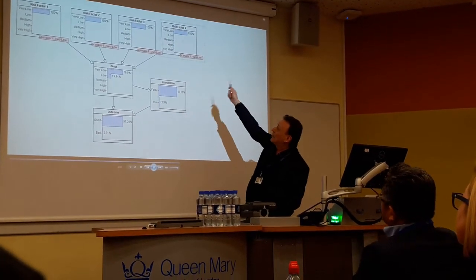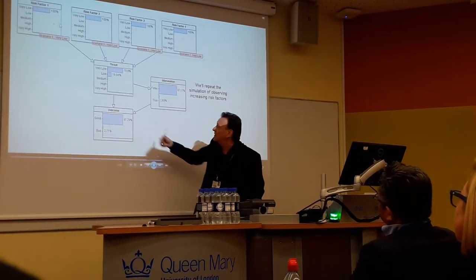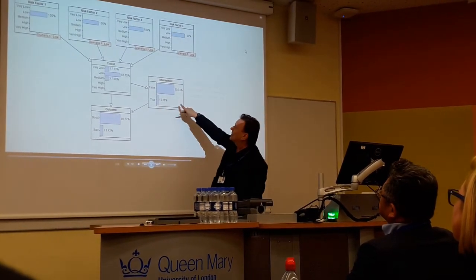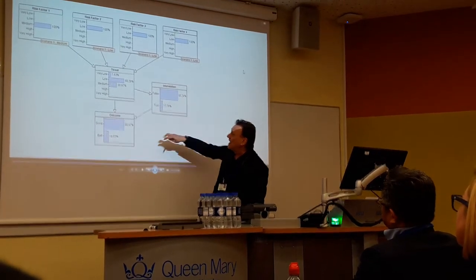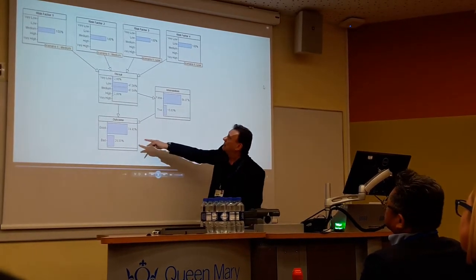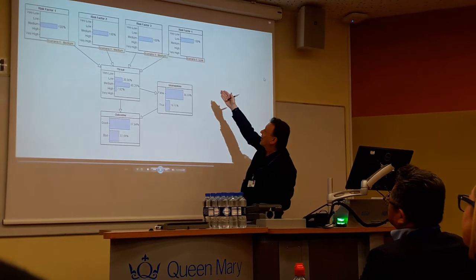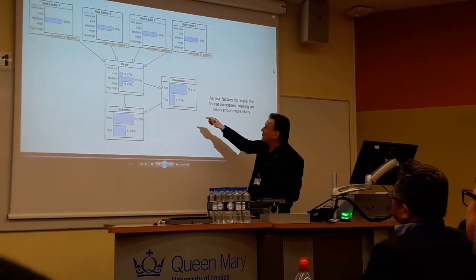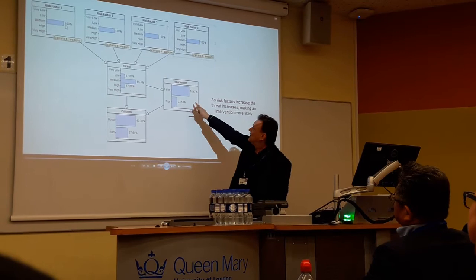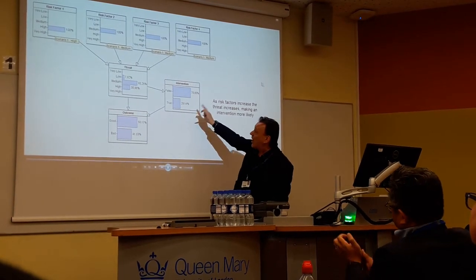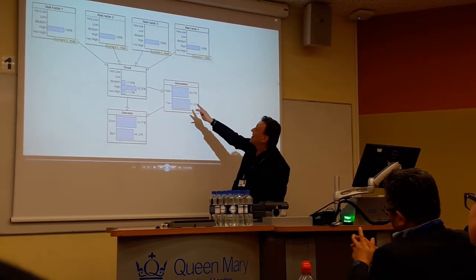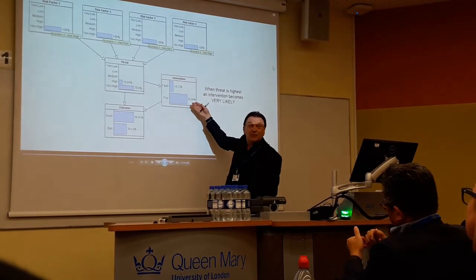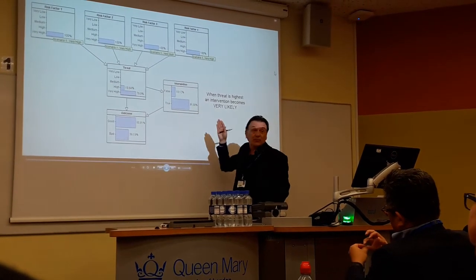Again, we start with the lowest possible risk factors, so the outcome is going to be good. As this increases, the chance of an intervention goes up as the outcome worsens. As the risk factors become increasingly worse, the probability of the intervention gets higher, and at the very high levels you get almost a switch — suddenly the probability of the intervention becomes almost certain.